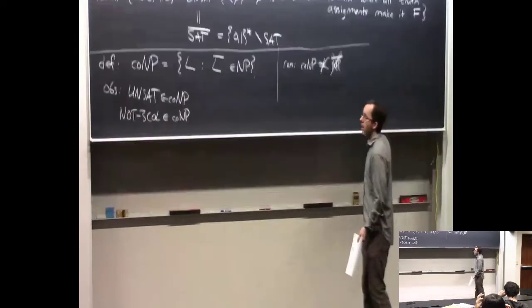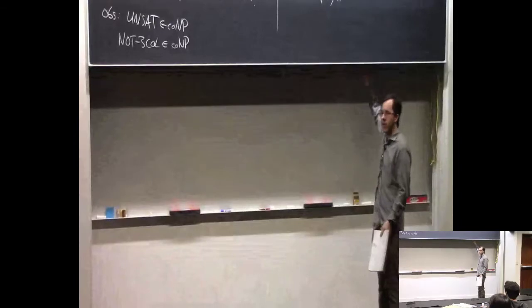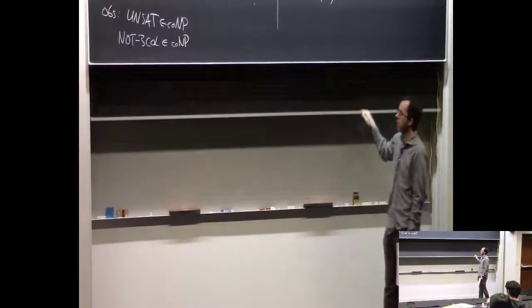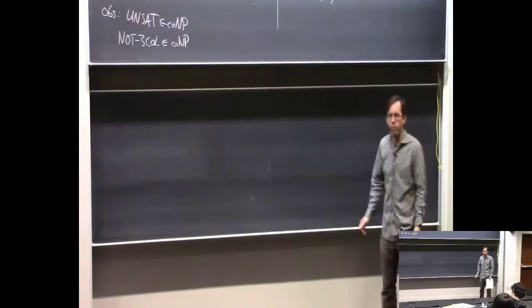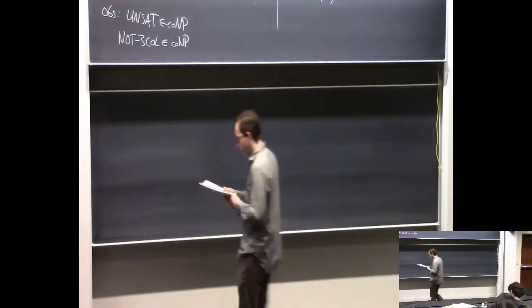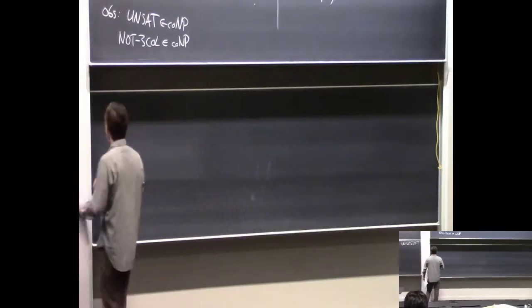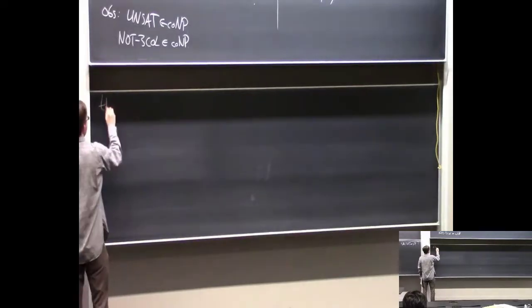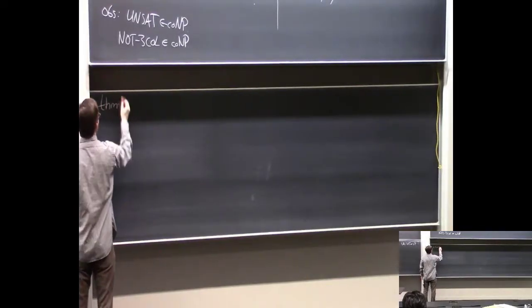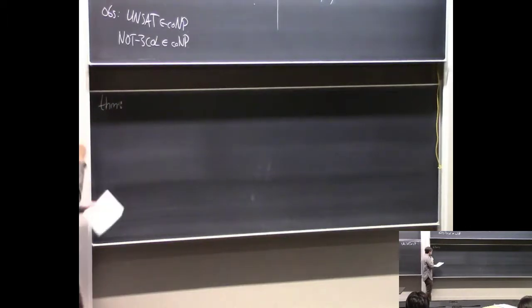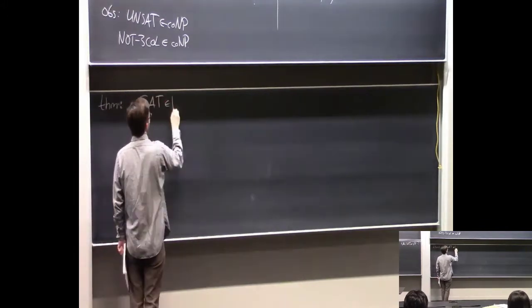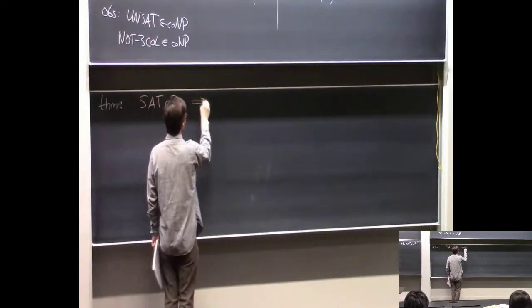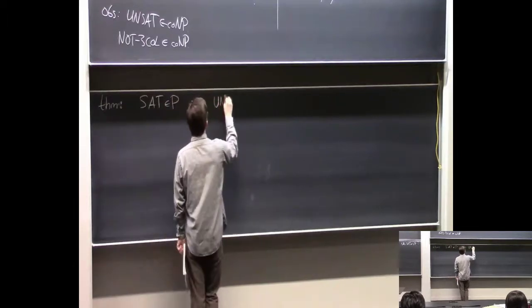Let's make some basic observations about this new complexity class. Here's the first basic observation about the complexity of UNSAT: I claim that if SAT is in P—which we don't really believe, but it could be true—then UNSAT is also in P.